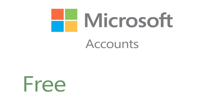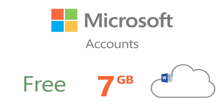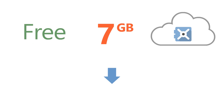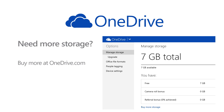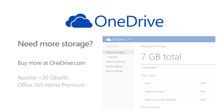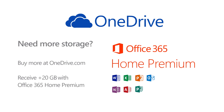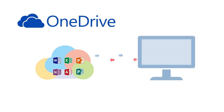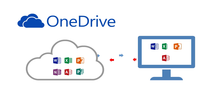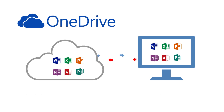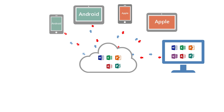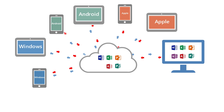Microsoft accounts are free and they include seven gigabytes of personal cloud file storage that is protected by your account username and password. This is called your OneDrive. If you need more storage, you can buy it through OneDrive.com or with an Office 365 Home Premium subscription. You can sync your OneDrive files with your computer using the OneDrive desktop sync tool, as well as access them through the apps on Apple, Android and Windows devices or most web browsers.